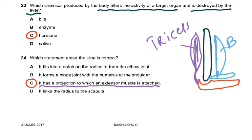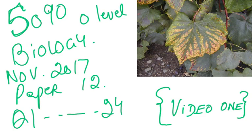The other answer options were wrong: the ulna does not form a joint with the shoulder — that was the scapula — and it does not fit into a notch on the radius, as the ulna and radius are two separate bones. That finishes questions 1 to 24. We'll continue the rest on the next video. Thank you very much.